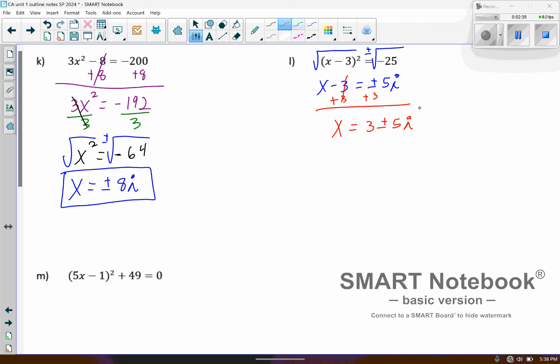And so we're left with x equals 3 plus or minus 5i. And that's it. We can't go any further. We can't actually add or subtract those. So we have to just leave it like that. You can write it out twice though, with the plus and then also with the minus.